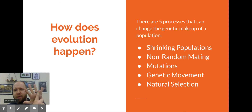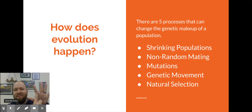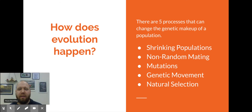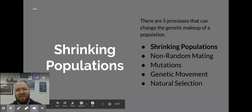A quick overview: shrinking populations, non-random mating, mutations, genetic movement, and natural selection were those five factors. We're going to break each of them down in a video. This video is for shrinking populations.